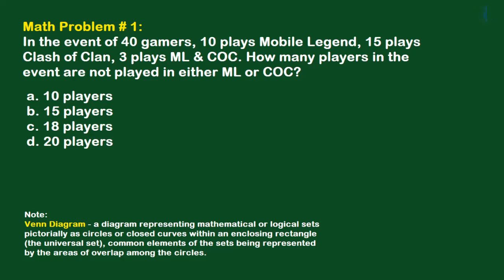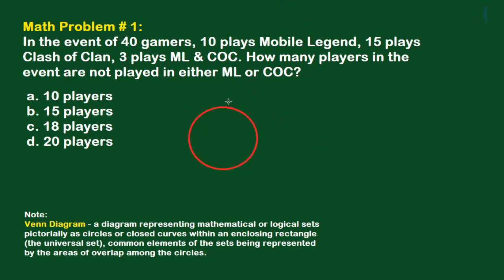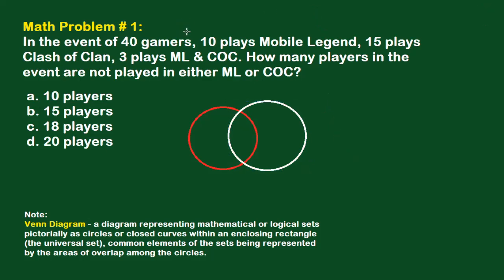To solve this problem, we analyze the definition of the Venn diagram and apply it to the problem. Since the problem includes only Mobile Legends and CoC, we formulate only two circles. Let's draw one circle for Mobile Legends, then change the color to red, and the other circle for CoC.